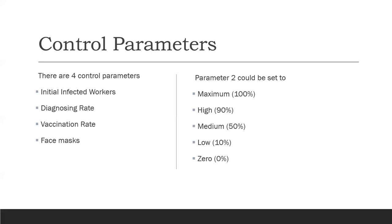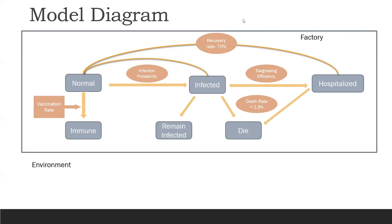Let me explain the model diagram. There are initially normal people and infected people inside the factory. At day zero of the model, there will be a set of infected people as you input to the system, and there will be the rest of the employees or workers who are normal.